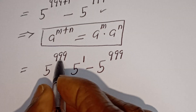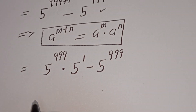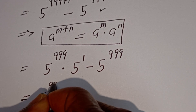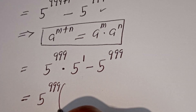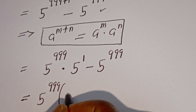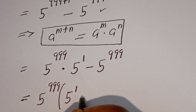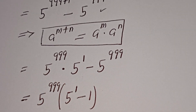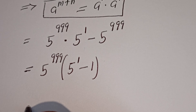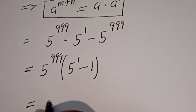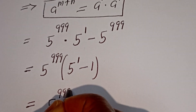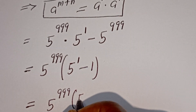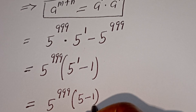Now, 5 to the power of 999 is common — let's bring it out. We have 5 to the power of 999, bracket: if you divide this by this we have 5 to the power of 1, minus if you divide this by this we have 1. That equals 5 to the power of 999, bracket, 5 to the power of 1 is 5, minus 1.